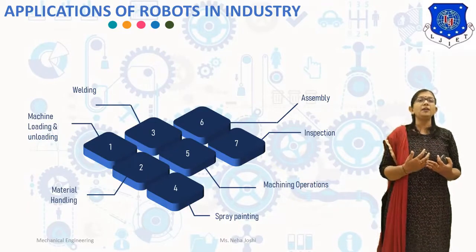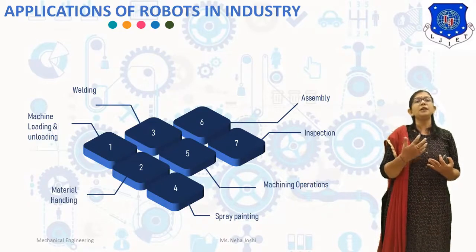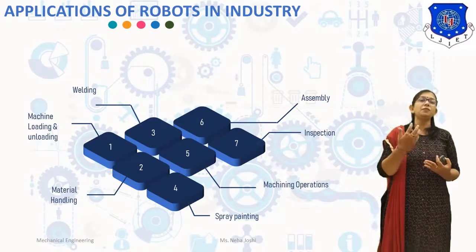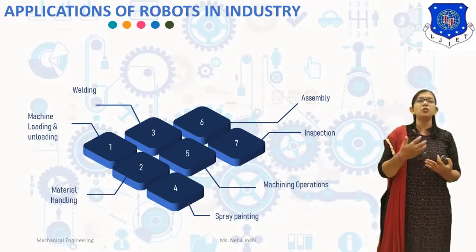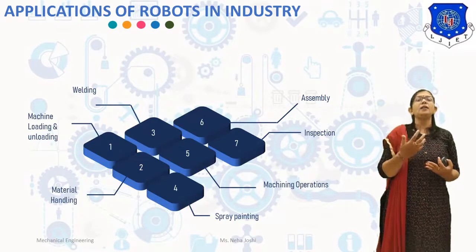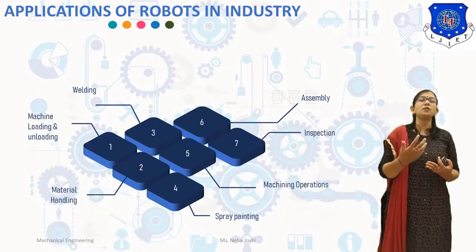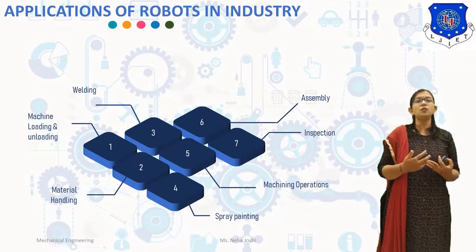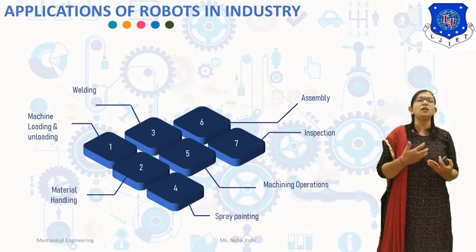The next application is material handling. Robots are used for shifting material or finished parts from one machine to a conveyor or feeder to the storage pallets, and arranging them in order — such an operation is known as palletizing. Robots are also used for shifting material from storage pallets to the machine or conveyor, which is known as de-palletizing.